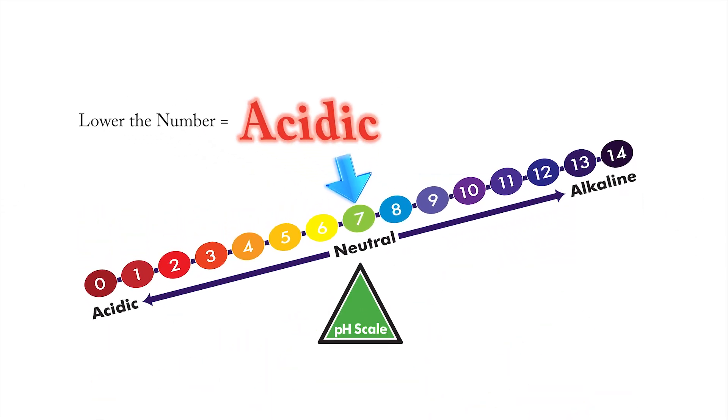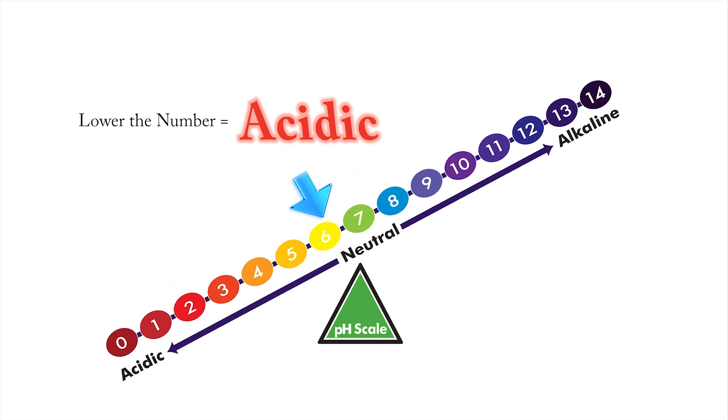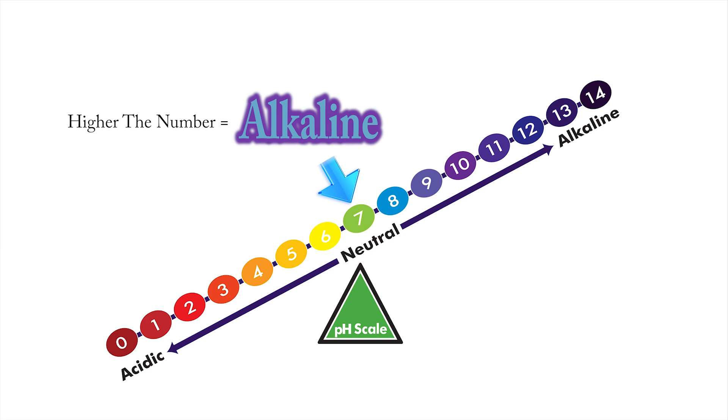The lower the number, the more acidic, and the colors range down from yellow to dark red. The higher the number, the more alkaline, and the colors range from cool blue to awesome purple.